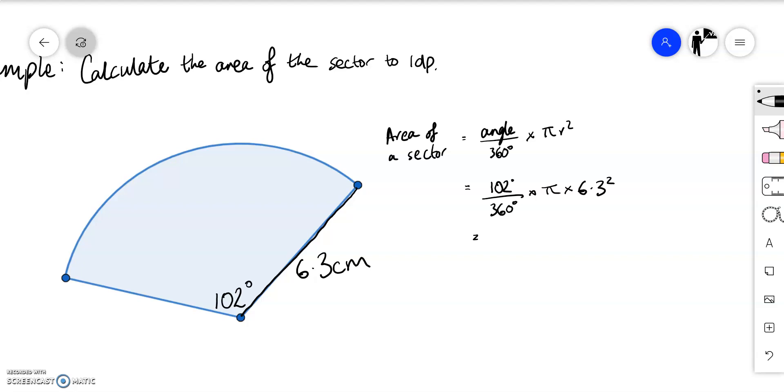We input that into a calculator. So 102 over 360 multiplied by pi multiplied by 6.3 squared. And that is going to be 35.32. And we want this to one decimal place. That's going to be 35.3 centimeters squared to one decimal place.